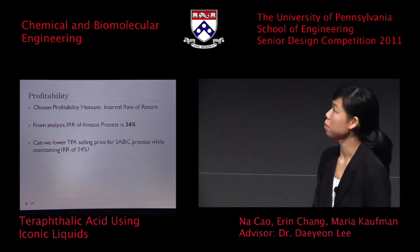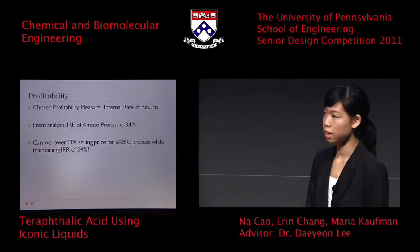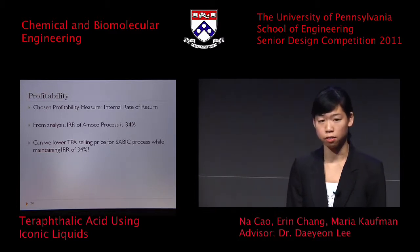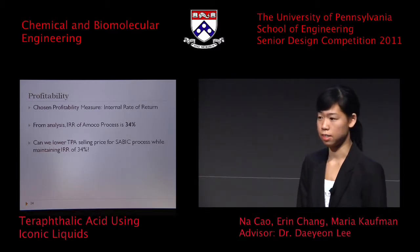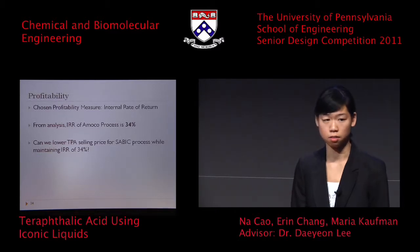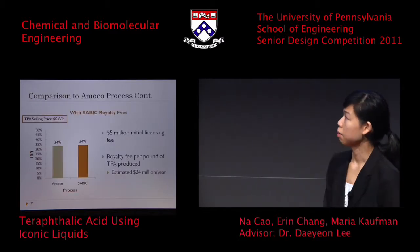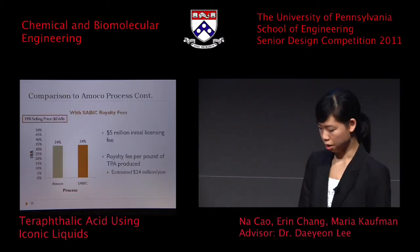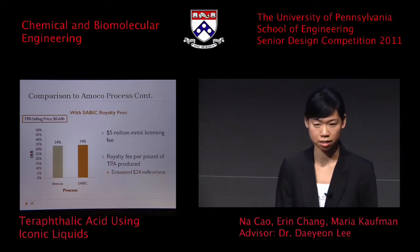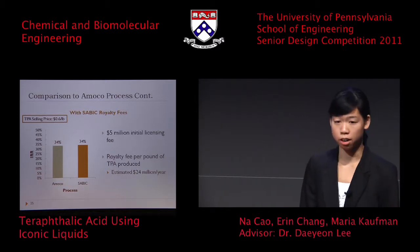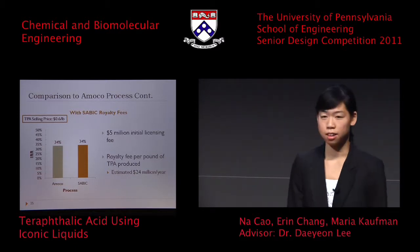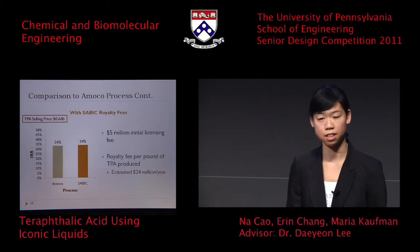To measure profitability, we decided to use the internal rate of return (IRR). We estimated that the Amoco process yields an IRR of around 34%, so we wanted to know if the SABIC process would yield an IRR higher than 34%. From the graph, when selling TPA at $0.60 per pound — the current going price — the IRR for both processes is around 34%. You may wonder why the SABIC process is not more profitable given that capital costs are highly decreased and the ionic liquid cost is minimized because we recycle 90% of it.